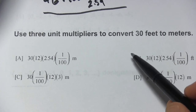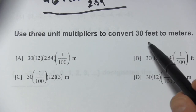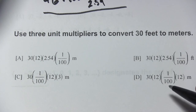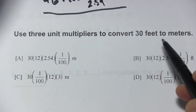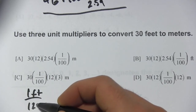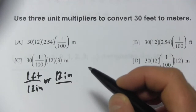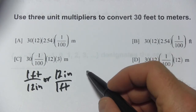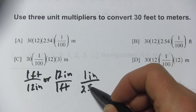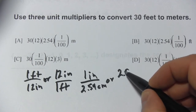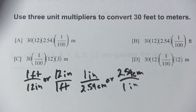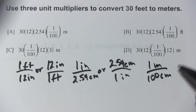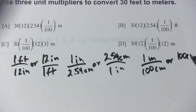Let's try one more. Here we're using three unit multipliers to go from feet to meters. We'll go from feet to inches, then inches to centimeters, then centimeters to meters. Feet to inches: 1 foot per 12 inches, or 12 inches per 1 foot. Inches to centimeters: 1 inch is 2.54 centimeters, or 2.54 centimeters per 1 inch. Centimeters to meters: 1 meter is 100 centimeters, or 100 centimeters is 1 meter.